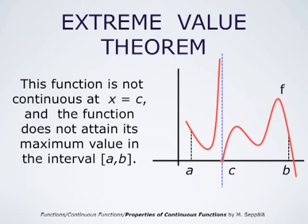A function which is not continuous at some point c does not necessarily attain its maximum or minimum value on the interval from a to b. This particular function does attain its minimum value at the point c, where the minimum value is zero. But as x approaches c from the left, the values grow arbitrarily large, so the function has a left-hand limit of positive infinity at x equals c, and does not attain a largest value on the interval.